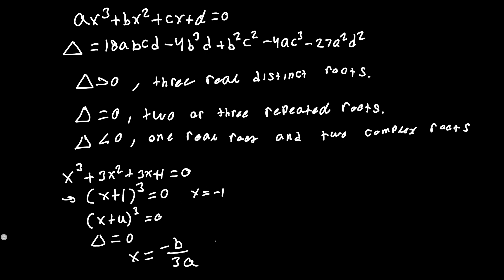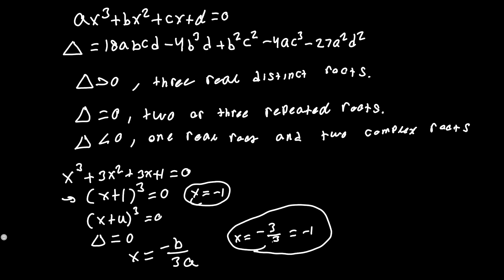Using the formula x = -b/(3a) with b = 3 and a = 1, we get x = -3/3 = -1, which matches the solution from the factored form. All three roots are the same repeated root.